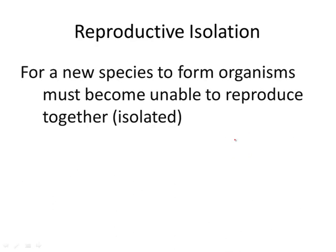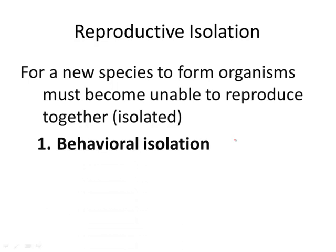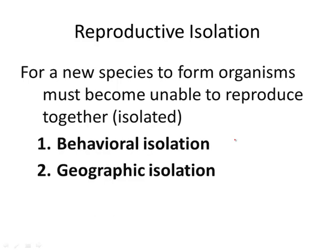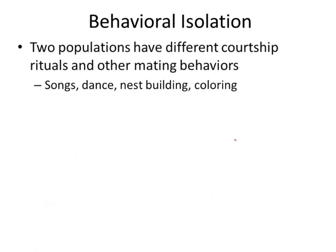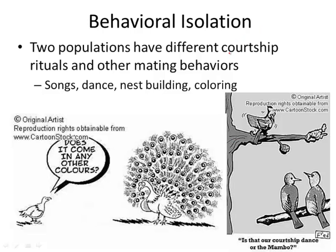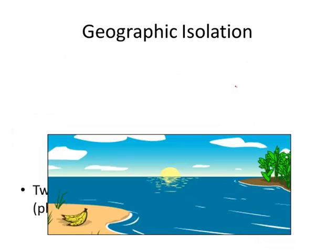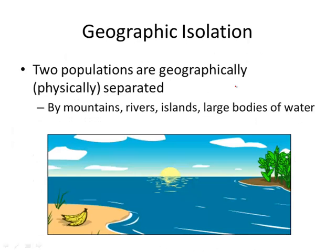We've been talking about how new species form through natural selection, but we also need to mention how species can be separated from each other — either through behaviors, location, or differences in timing. Behavioral isolation is when two populations have different courtship rituals or mating behaviors, such as different songs, dances, nest-building, or coloring. Over time, these differences influence whether they reproduce, and they can become different species.